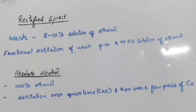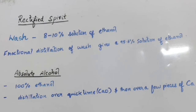To summarize: 100 percent ethanol can be obtained from rectified spirit upon distillation over quicklime (calcium oxide) and then over a few pieces of calcium. This 100 percent pure ethanol is known as absolute alcohol.